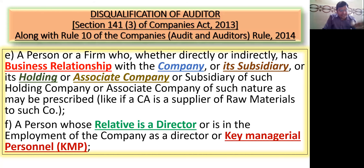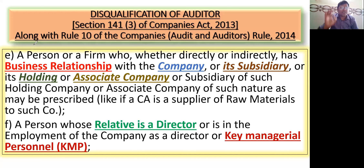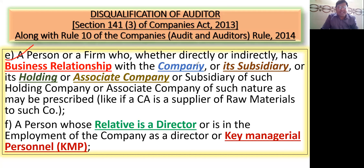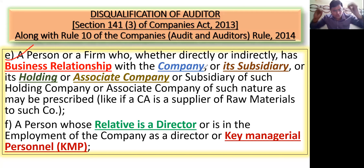In the last lecture we covered up to Clause D. This is Clause E. Clause E is very simple — disqualification of an auditor. If a person or a firm who, whether directly or indirectly, has a business relationship with the company or its subsidiary, holding, or associate company, then they are disqualified.